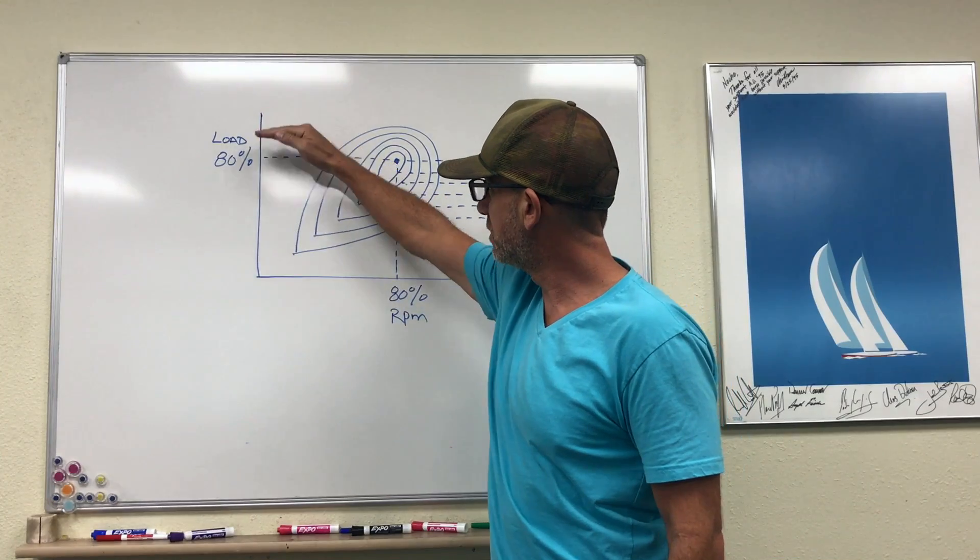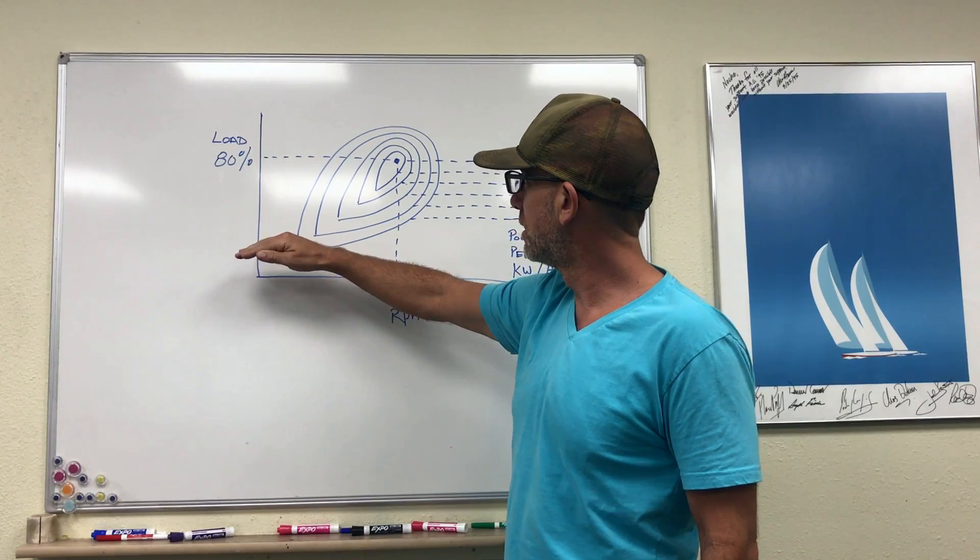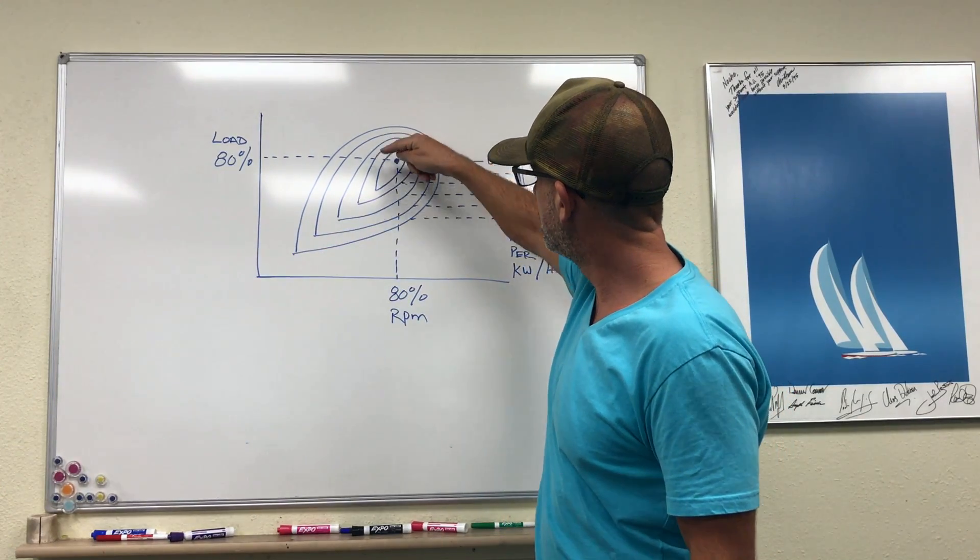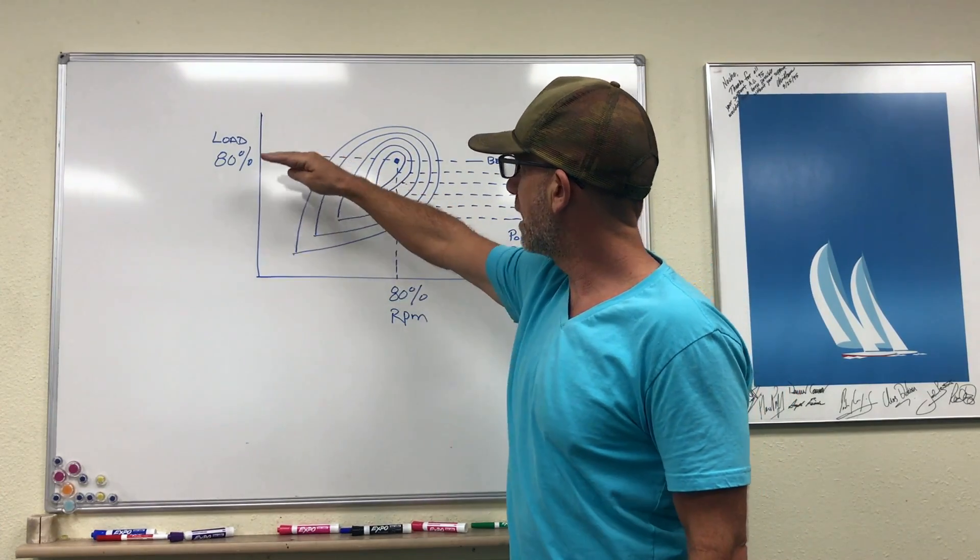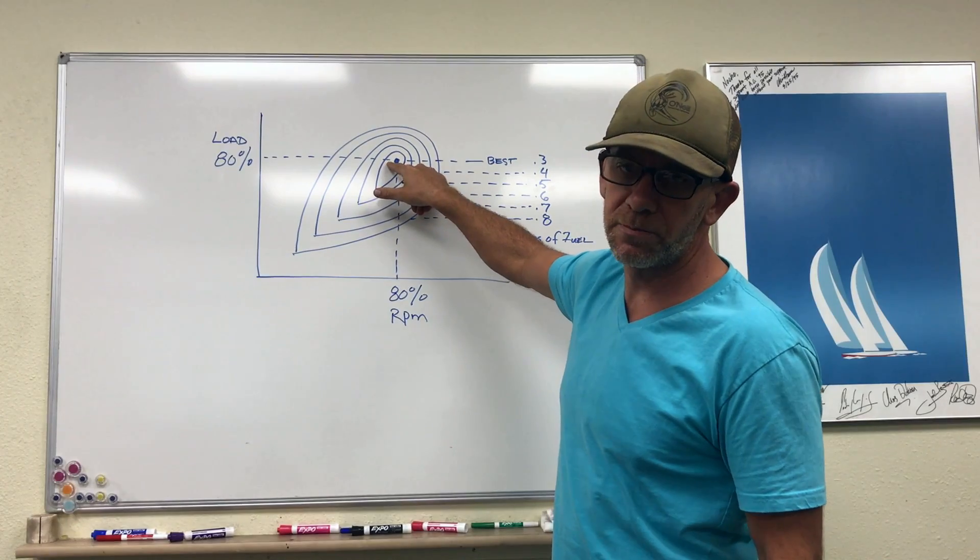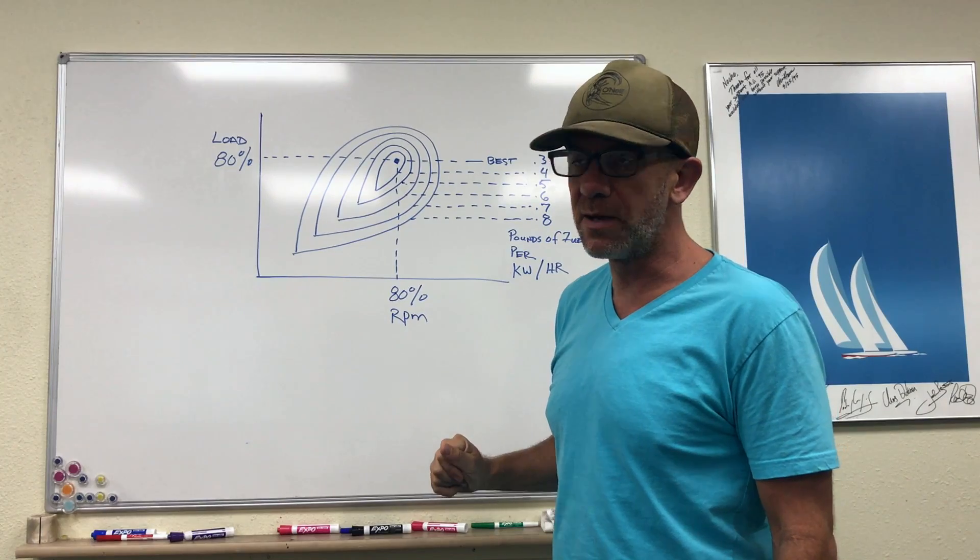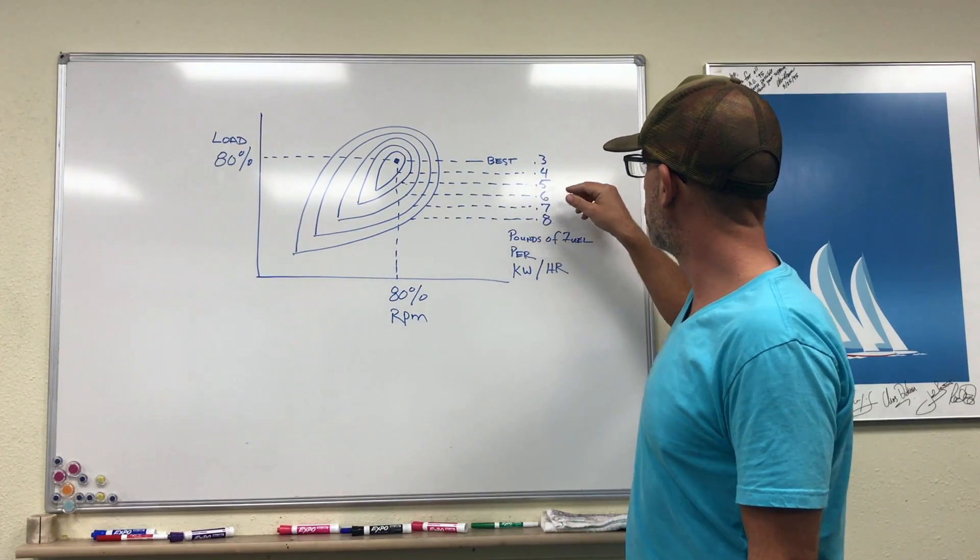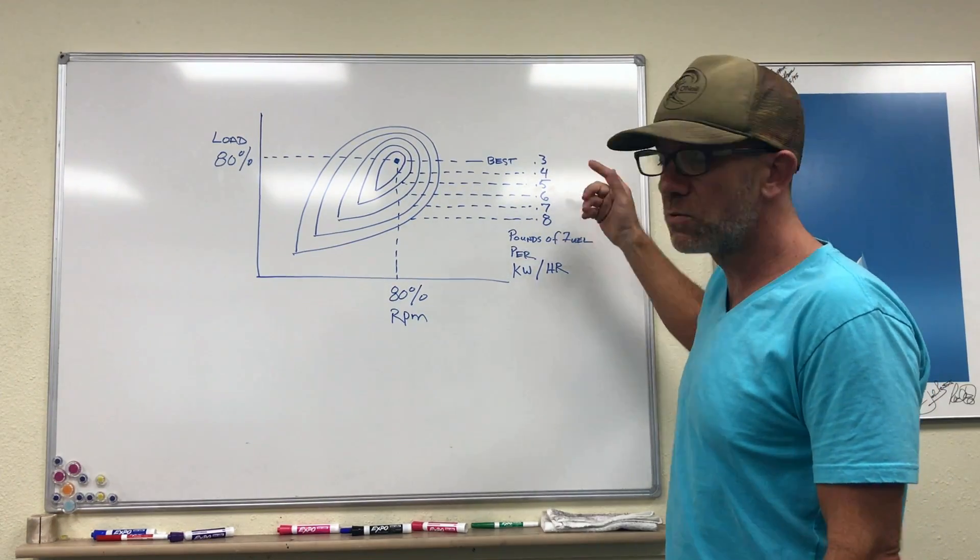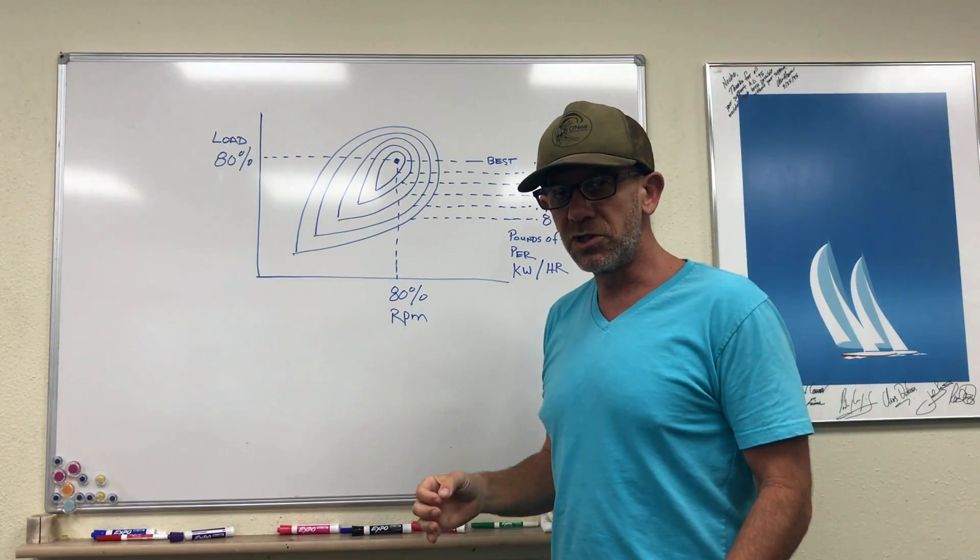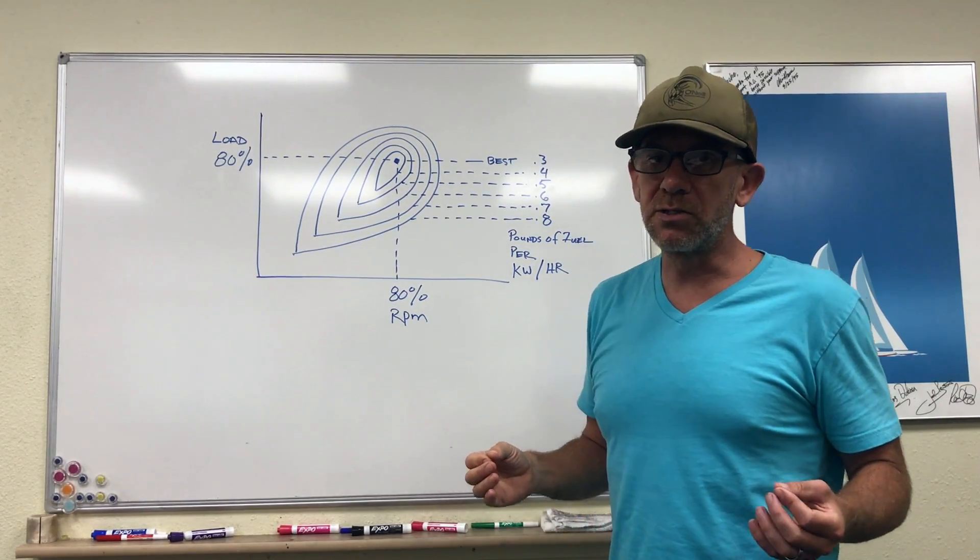If the load changes, so the amount of power that you're drawing from the generator changes, you're going to move into these different concentric circles here. And depending on how far away you move from that theoretical 80% load determines how your efficiency ends up. So as you move away, you go from burning 0.3 pounds to 0.4, 0.5, and so on. And so what that shows is that with a poorly loaded generator, you're not going to get nearly as good of efficiency.